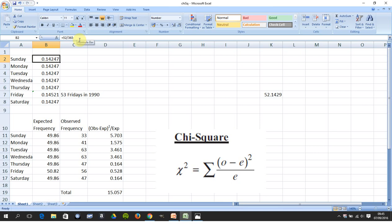So there we are, 52 over 365, 52 over 365, and for the Friday just up there, 53 over 365. The expected frequency is the probability of a Sunday, which is 0.14247 or b2, by the number of babies or children observed, which is 350, gives me 49.86.